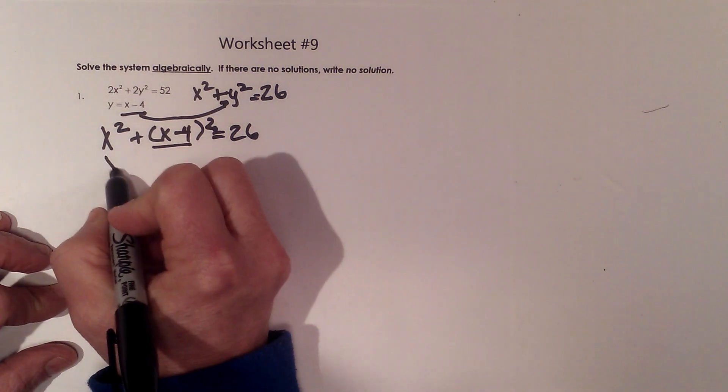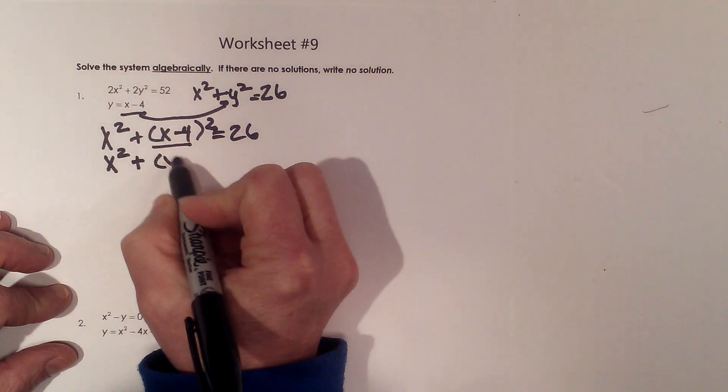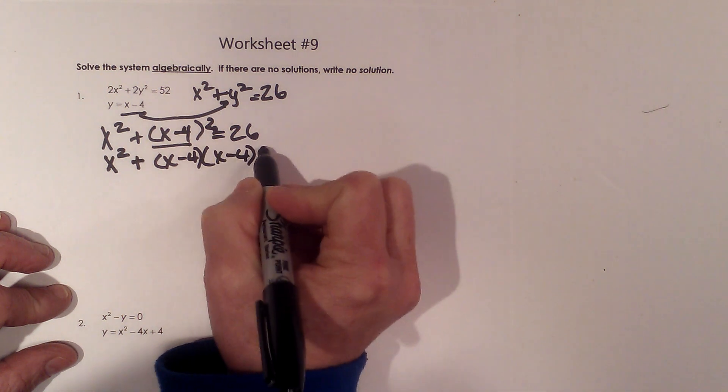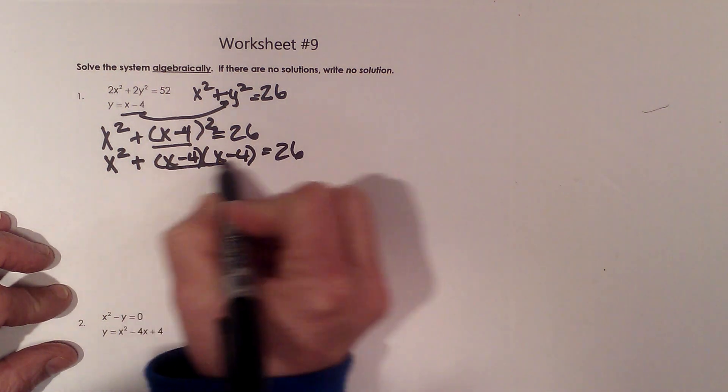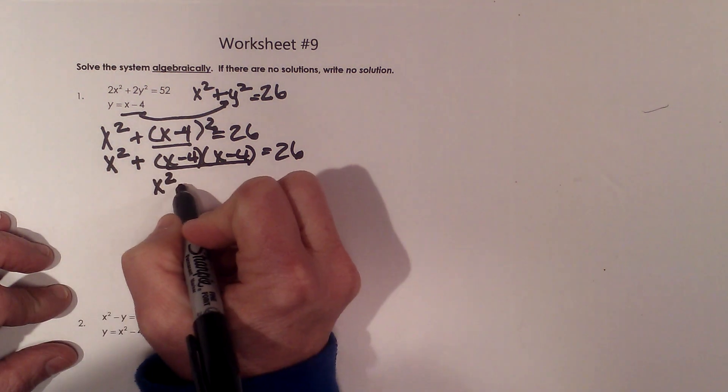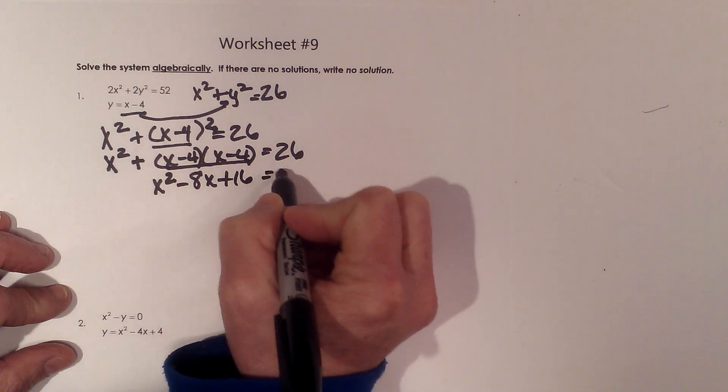Let's foil this one out. So I have x² + (x - 4)(x - 4) = 26. To foil that, I'm going to do first, outer, inner, last. So x² - 8x + 16 = 26.